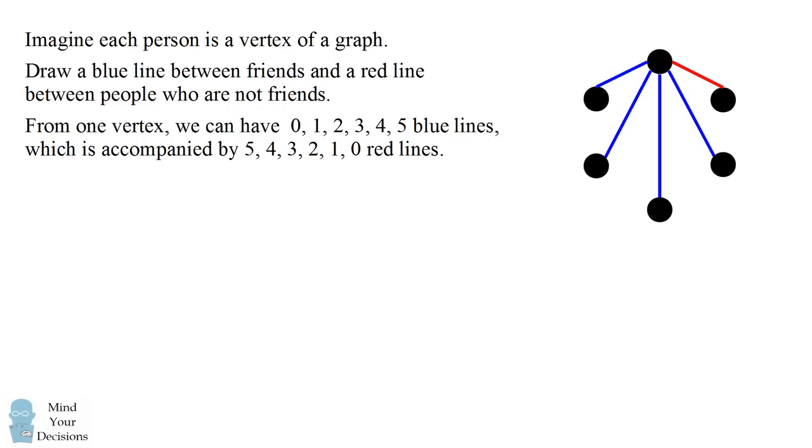So if we have four blue lines, we'll have one red line. If we have three blue lines, we'll have two red lines, and so on. The number of red lines and blue lines always adds up to five. Because of this, we will always have at least three blue lines or at least three red lines. We'll consider each case separately.